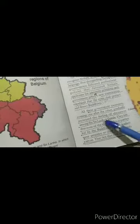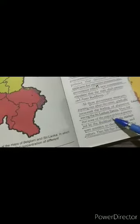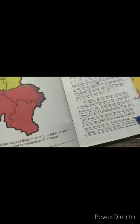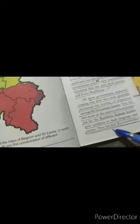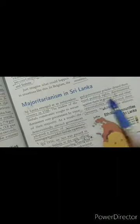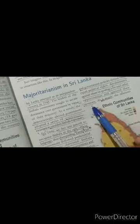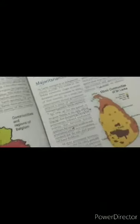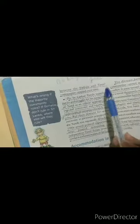What was the result? The relations between the Sinhala and Tamil communities became strained over time. There was bitterness between Sinhalas and Tamils in Sri Lanka. Sri Lankan Tamils felt that none of the major political parties led by Buddhist Sinhala leaders were sensitive to their language and culture. They felt the constitution and government policies denied them equal political rights, discriminated against them in getting jobs and other opportunities, and ignored their interests.